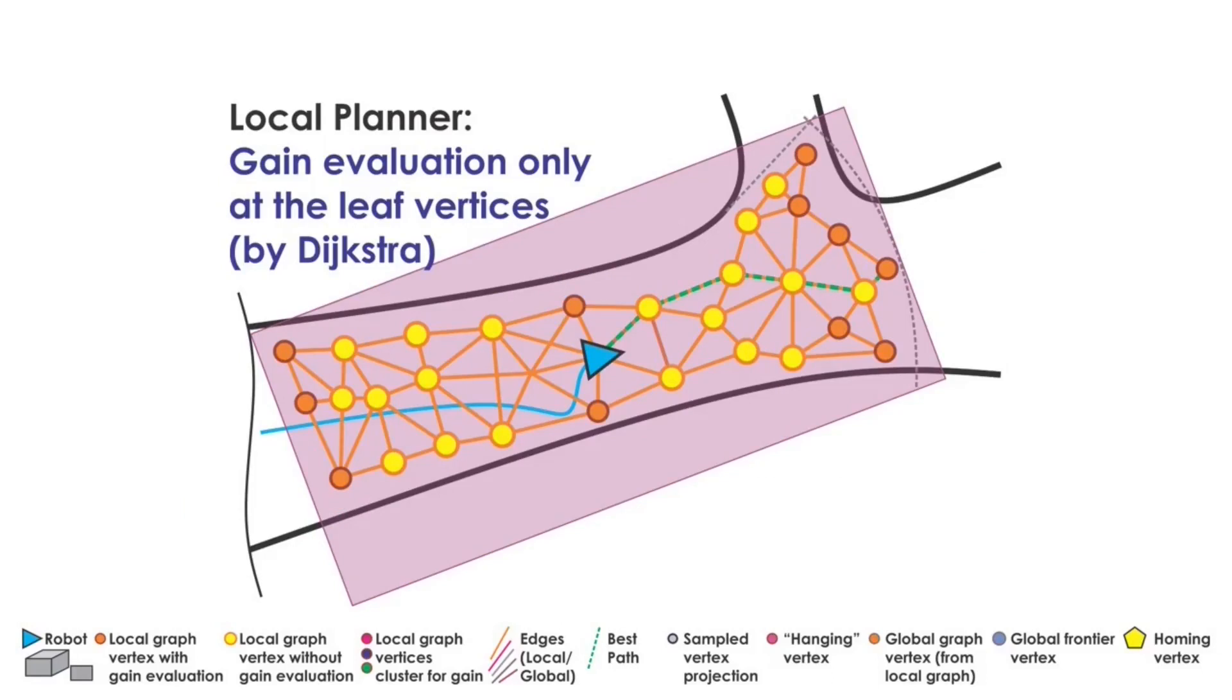Once the graph is built, Dijkstra shortest paths are calculated from the robot's location. A volumetric gain is then calculated for the vertices in the graph. If desired to reduce the computational load, the gain may be calculated only at the leaf vertices derived from the Dijkstra paths. This option may reduce the exploratory quality of the paths and is only used for computationally constrained systems such as micro-flying robots.